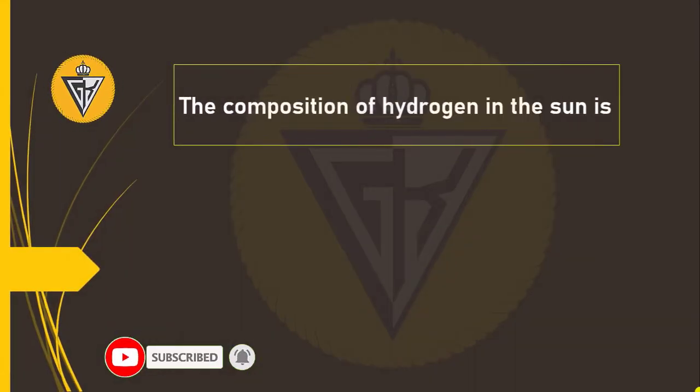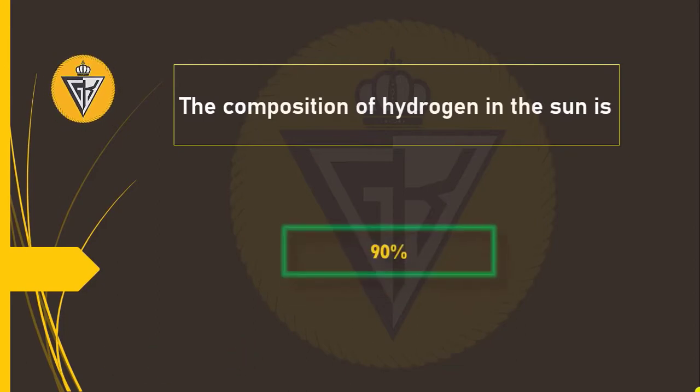The composition of hydrogen in the sun is 90%.